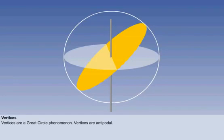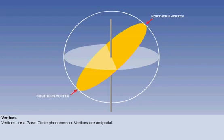Vertices are a phenomenon relating to great circles. By definition, a great circle has the same centre and radius as the Earth itself. The vertices of a great circle are the northernmost and southernmost positions of the great circle. The vertices are antipodal — in other words, diametrically opposite.